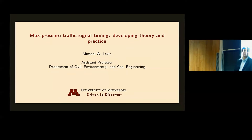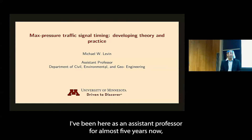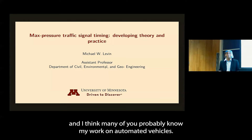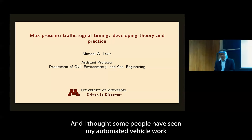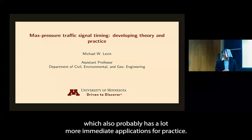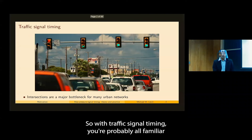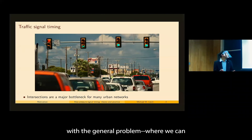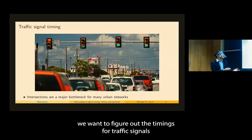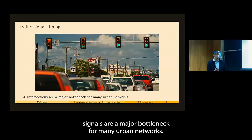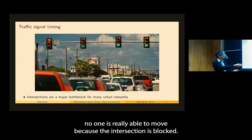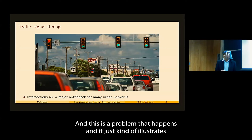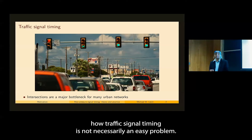Good morning, everyone. I've been here as an assistant professor for almost five years now. Many of you probably know my work on automated vehicles, but I have also been studying a new method of traffic signal timing. I wanted to talk about this, which probably has a lot more immediate ramifications for practice. With traffic signal timing, we want to figure out the timings for traffic signals. These intersections controlled by traffic signals are a major bottleneck for many urban networks.